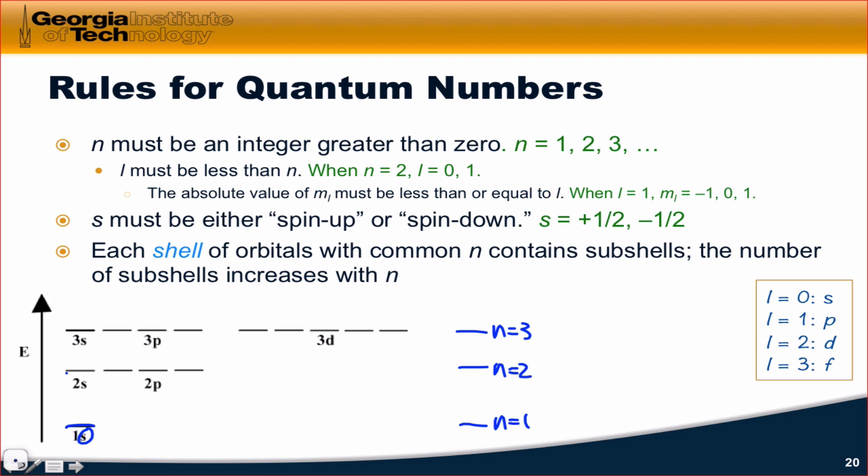At n equals 2, we get the 2s, as well as the three 2p orbitals, plus 1, 0, and minus 1 for m sub l, right? Within each of these levels, also, we can have a spin-up electron and a spin-down electron. And so,